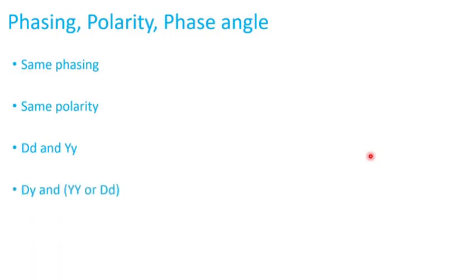If you have delta-wye and wye-wye, or delta-delta, it's not recommended that they are connected in parallel because delta-wye has a 30-degree phase shift. Wye-wye has zero, delta-delta has zero.